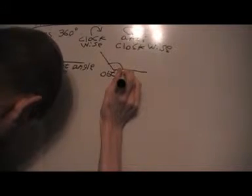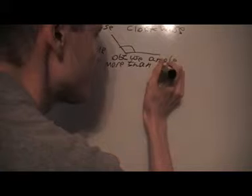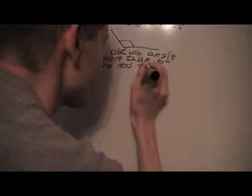The next one is an obtuse angle, which is more than 90 degrees and less than 180 degrees.